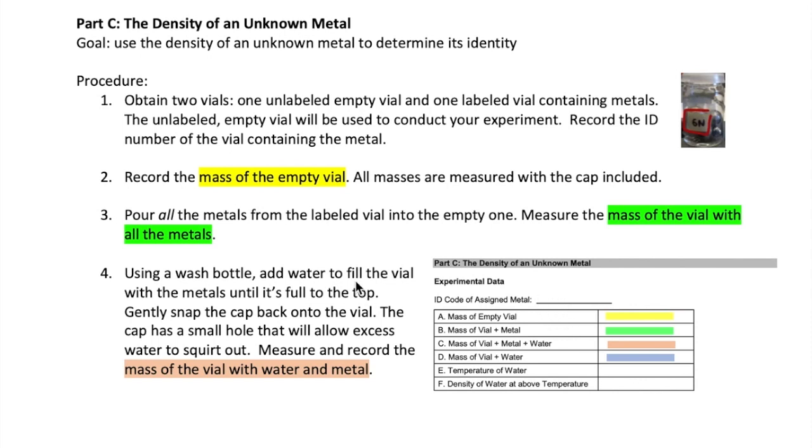Now you will go ahead and measure 4 different masses using the unlabeled vial. All the masses would be measured with the cap included. First, just measure the empty mass of the vial and record it where the yellow spot is. And then transfer all the metals from the labeled vial to the unlabeled vial. And then measure and record the mass of the vial containing the metal and record it here.